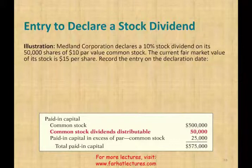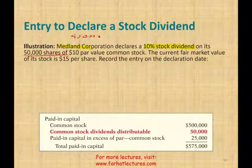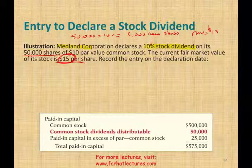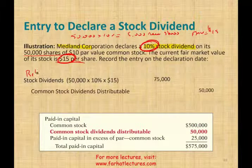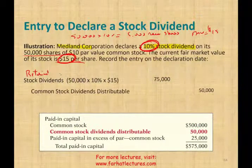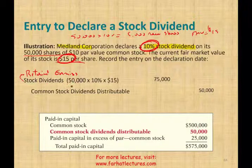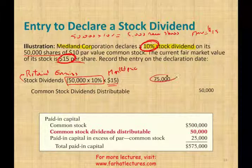The best way to illustrate this is to work an example. Assuming Midland Corporation declares a 10% stock dividend — 10% is small, so we use fair market value. On its 50,000 shares, they're going to issue 10%, meaning 5,000 new shares. The current fair market price is $15. We debit stock dividend — in some textbooks you'll see a debit to retained earnings, which is also acceptable, because stock dividend is closed into retained earnings. We debit stock dividend for 50,000 times 10% equals 5,000 shares times $15, which comes to $75,000.